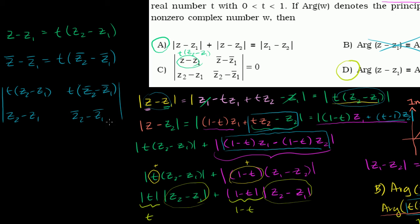And so what is this determinant? It's going to be this times this. So it's t times z2 minus z1, times z2 minus z1, times the conjugate of those. So it's that times that, minus this times this. So minus t z2, z1, z2 minus z1, times the conjugate of z2, minus the conjugate of z1.